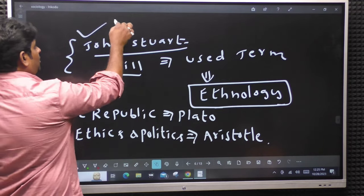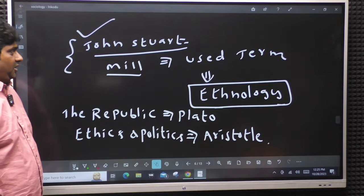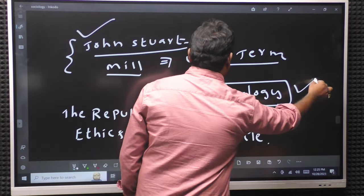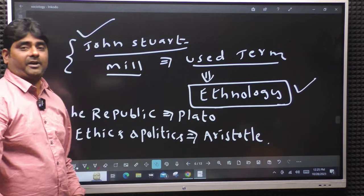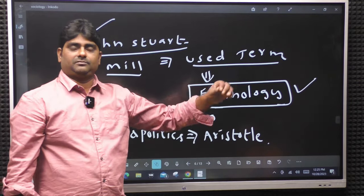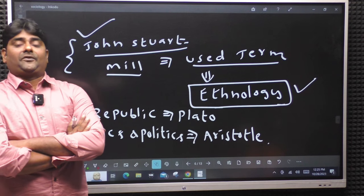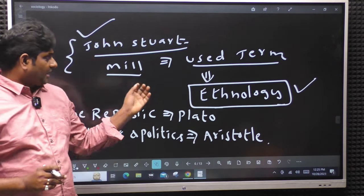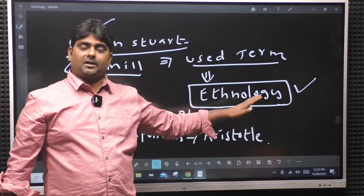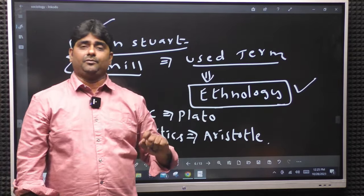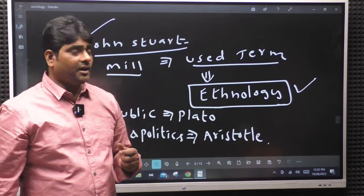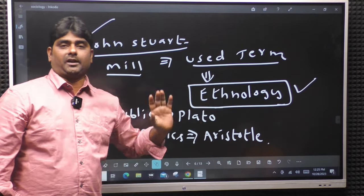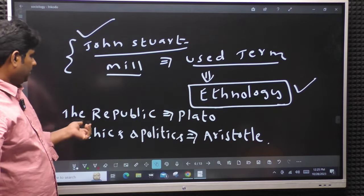Along with John Stuart Mill - John Stuart Mill is the first to use the term ethnology. Ethnology means the study of races and origin, which is part of anthropology. We also use the term socialization. John Stuart Mill is associated with ethnology and socialization.